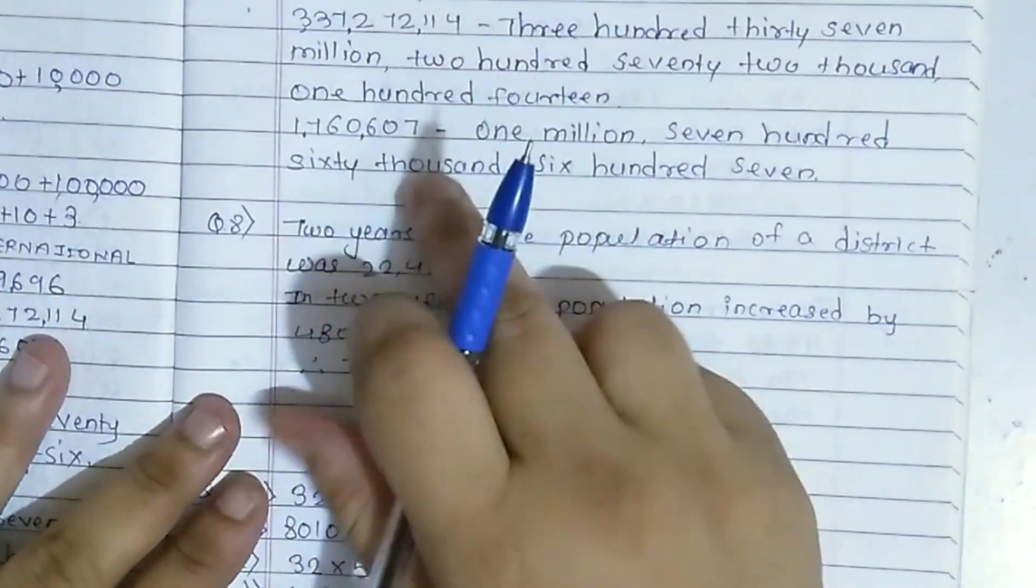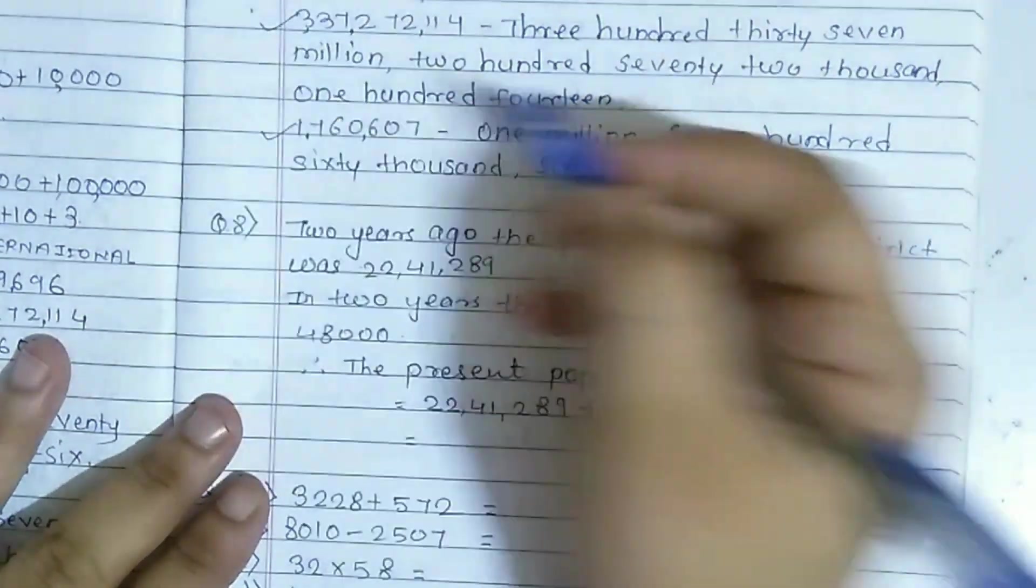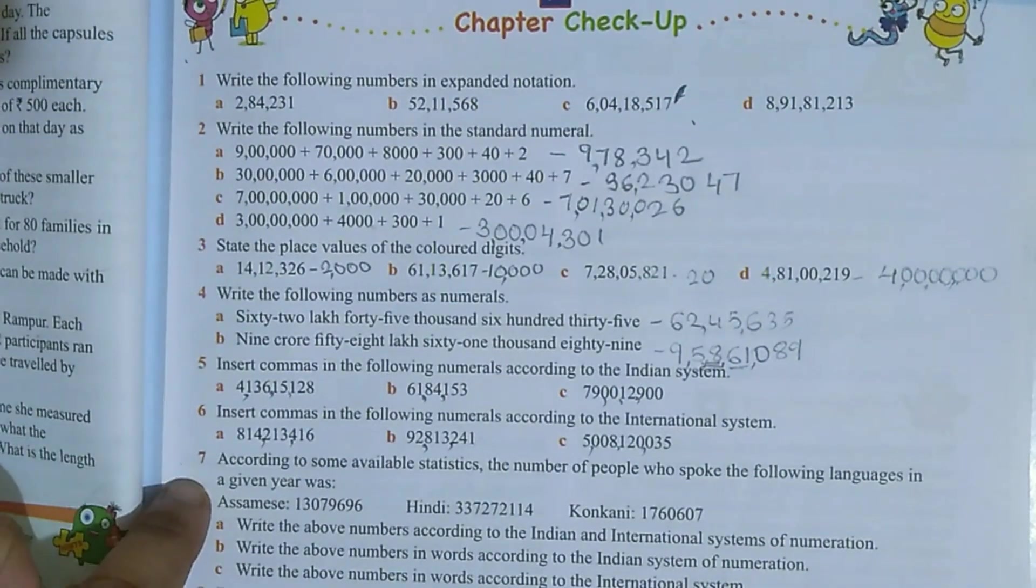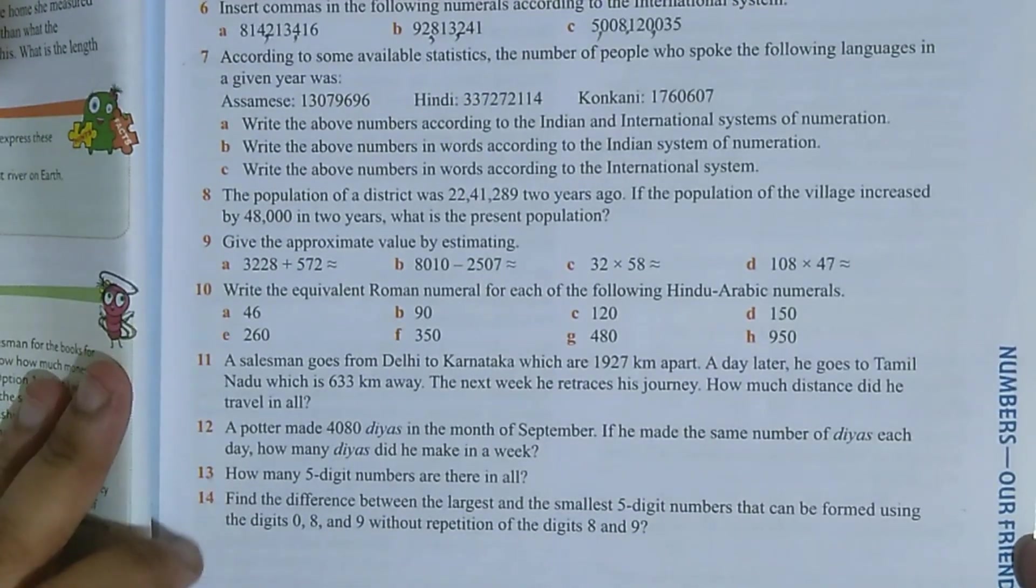Remaining two I have written here. See, this one and this one. So here our chapter check number 1 to 7 is over. In next video, we will solve question number 8 to 14. Thank you so much.